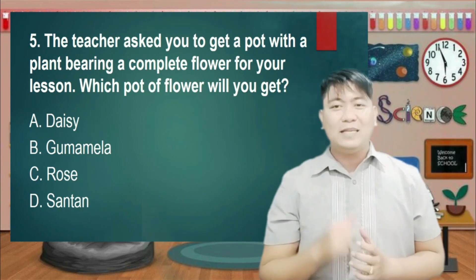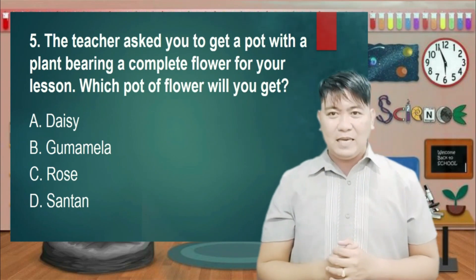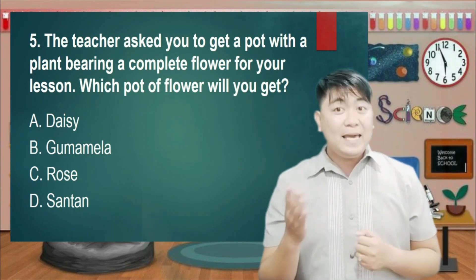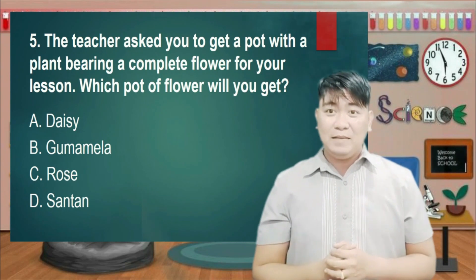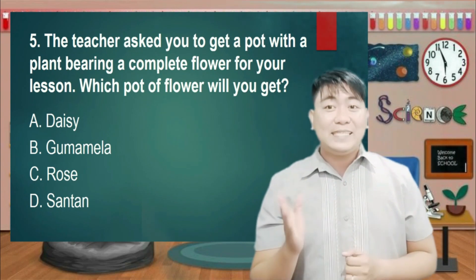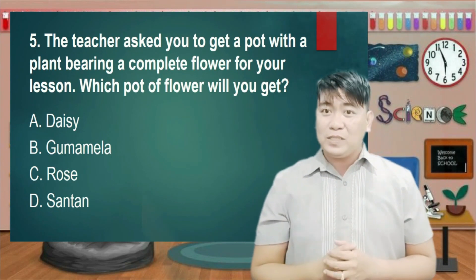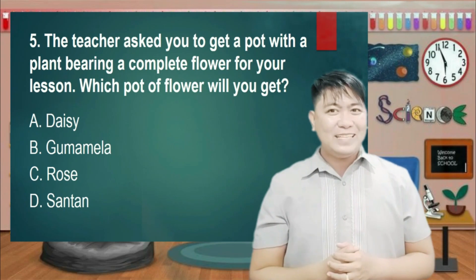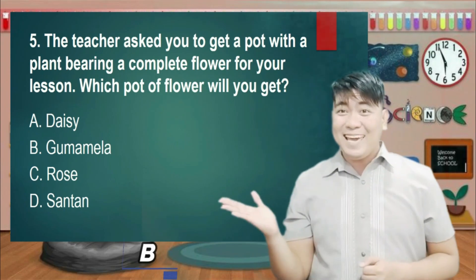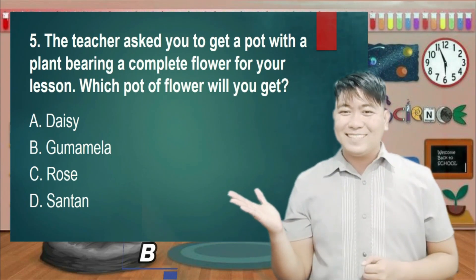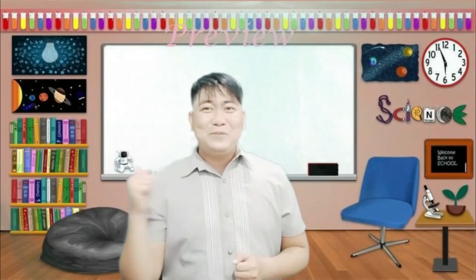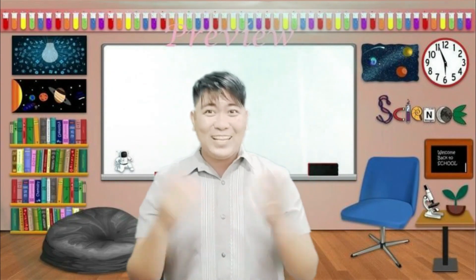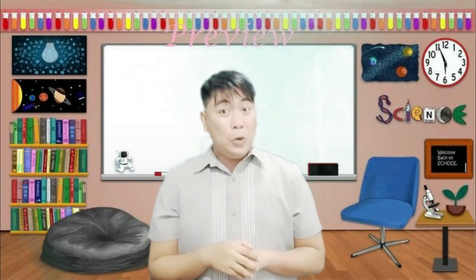Number 5: The teacher asked you to get a pot with a plant bearing a complete flower for your lesson. Which pot of flower will you get? A. Daisy, B. Gomamella, C. Rose, D. Santa. And the answer is B. Great job, learners! Congratulations! I am so proud of you.